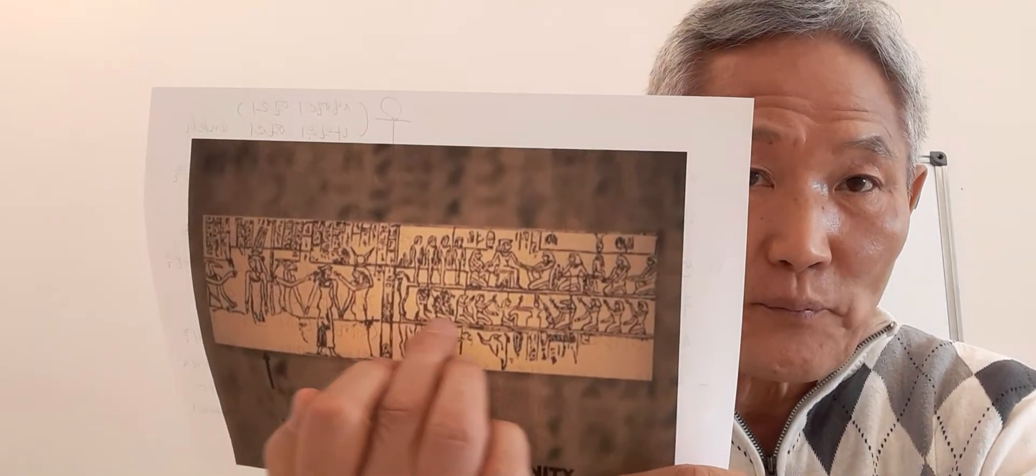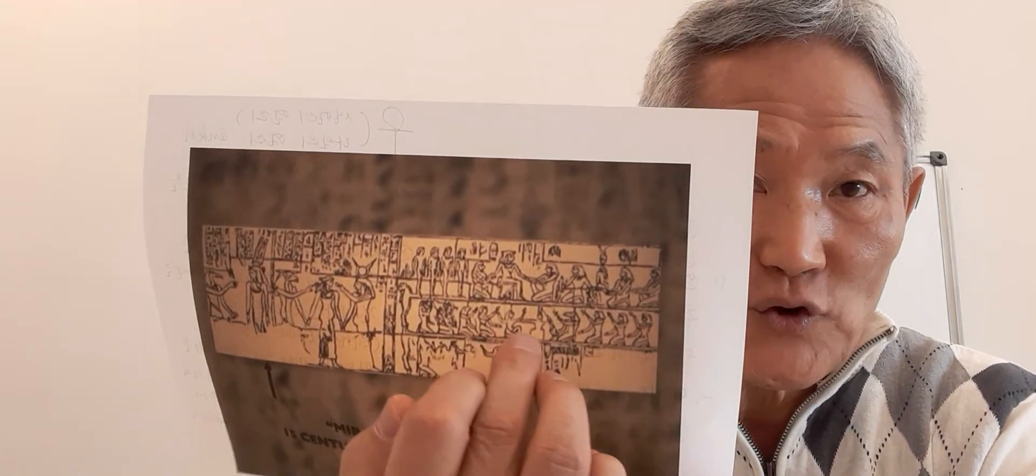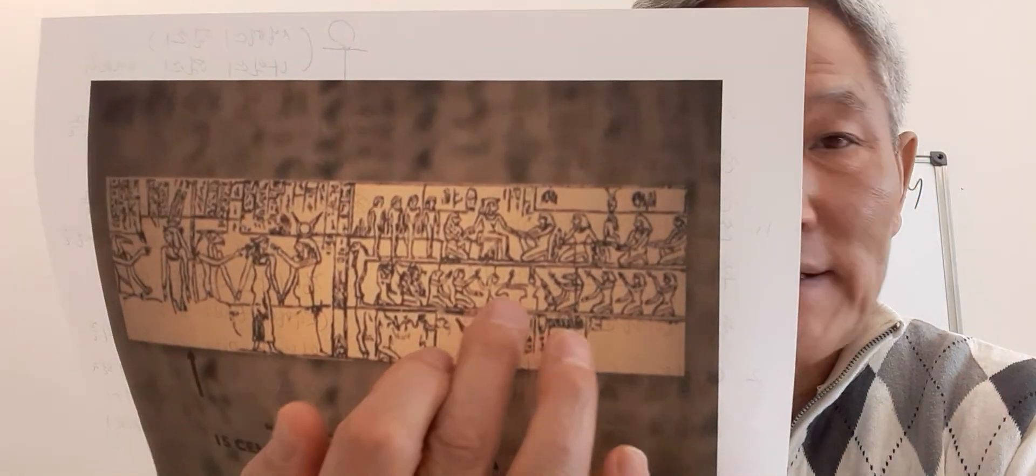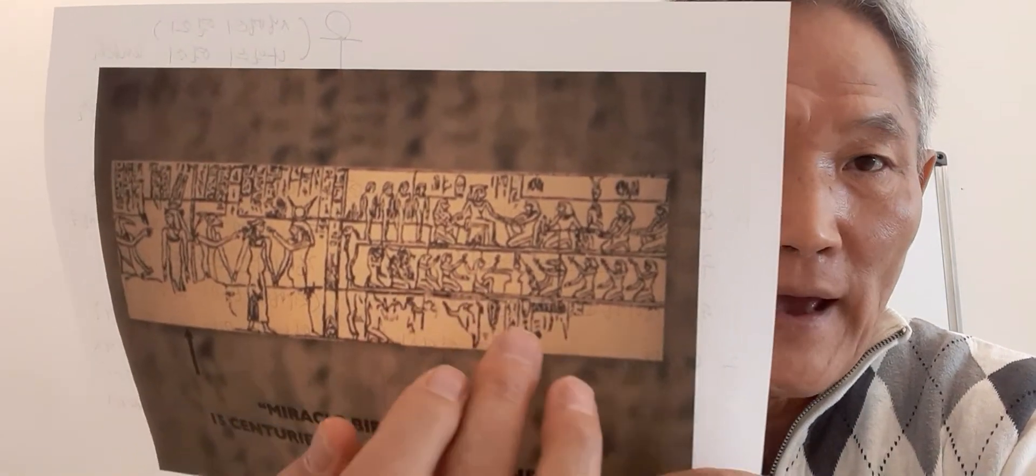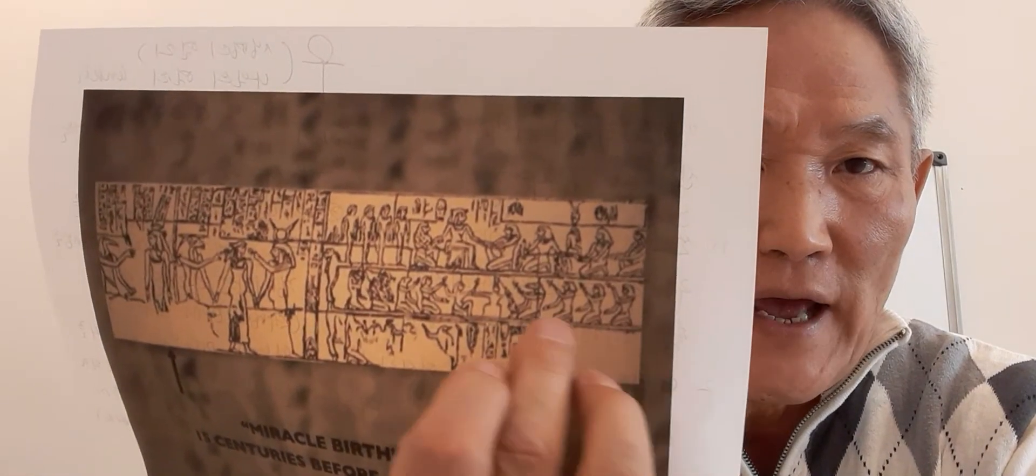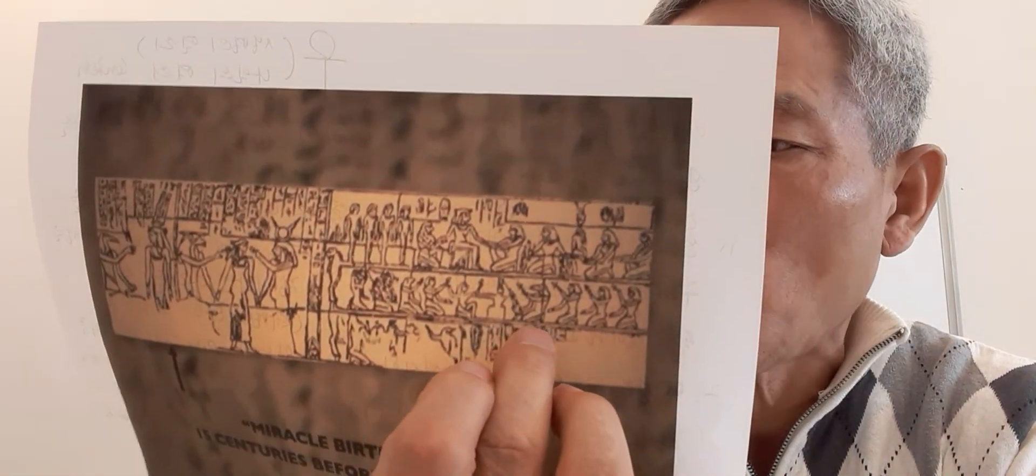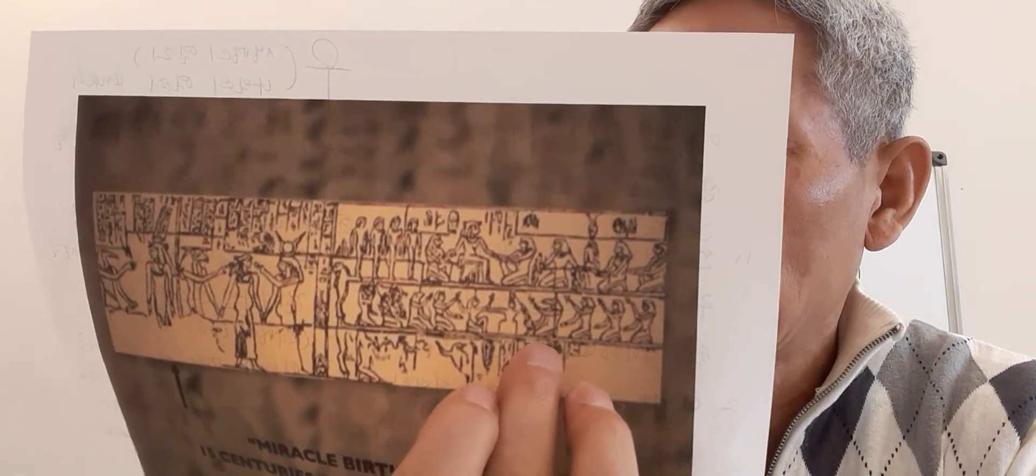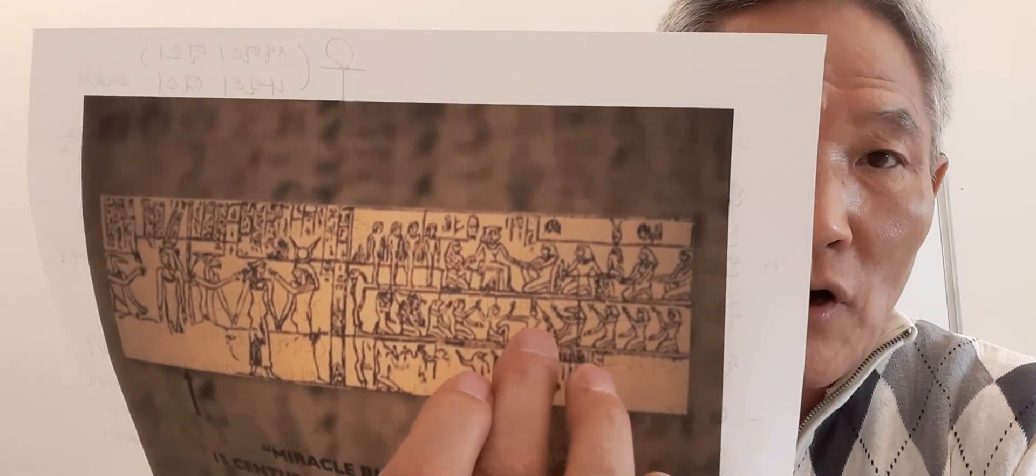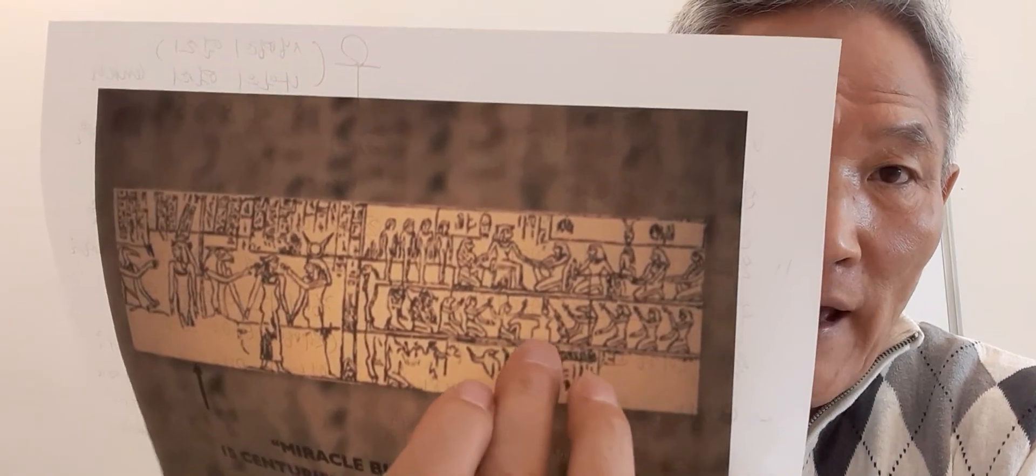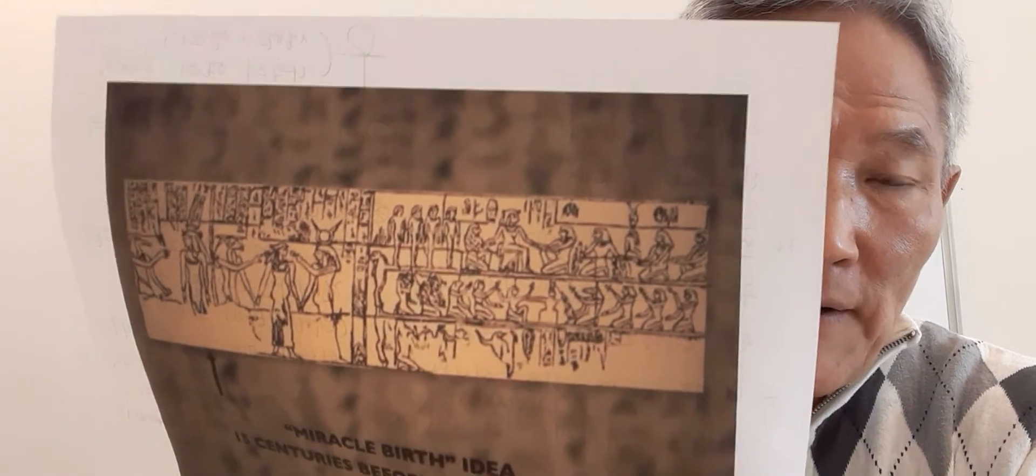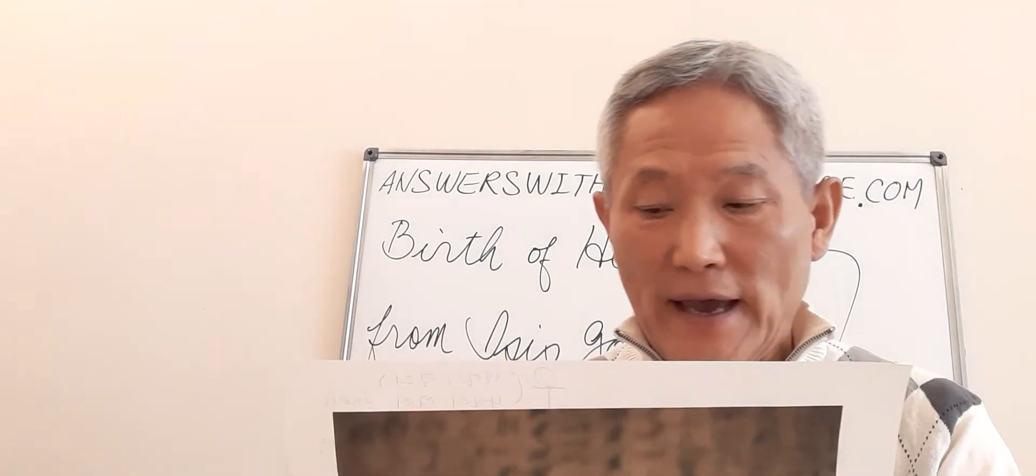On the bottom one, when you look at it closely, they have ankh cross over here, and here are three kings here. The first one is called Khnom, Khnom God, and they have some kind of present in his hand.